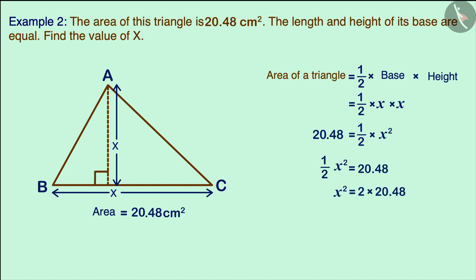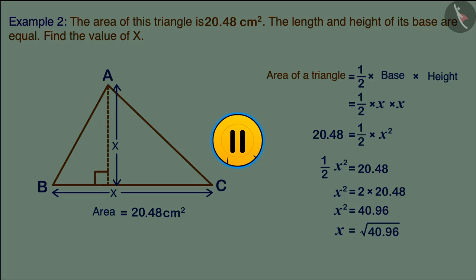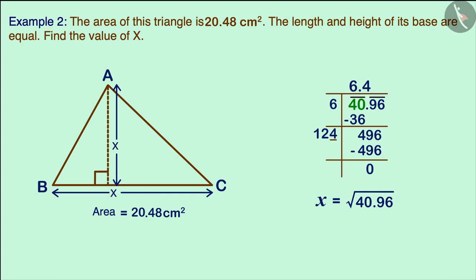The area of the triangle is given as 20.48 square centimeters. Solving the equation, we get x squared equals 40.96. To find x, we need to find the square root of 40.96. We get the square root of 40.96 as 6.4. Therefore the height of the triangle and the length of its base are both 6.4 centimeters.